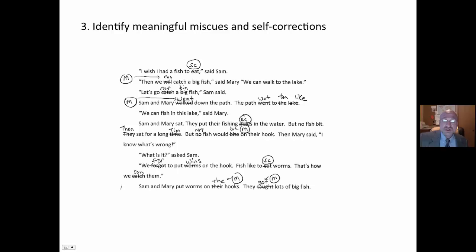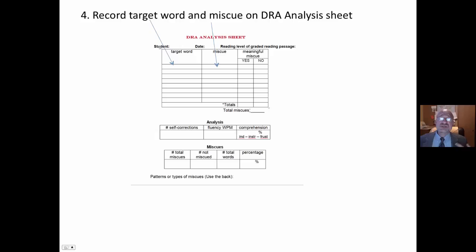And again, I like to keep this as simple as possible. When I'm all done, I use the DRA analysis sheets. First of all, I record the target word and exactly what the student says. This gives me a good sense. We'll see a pattern. That's the first step.